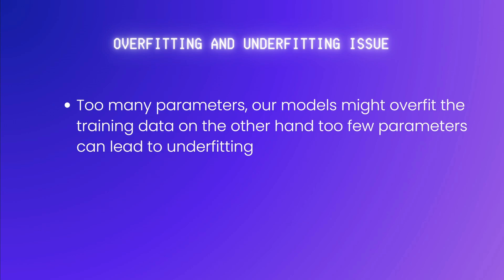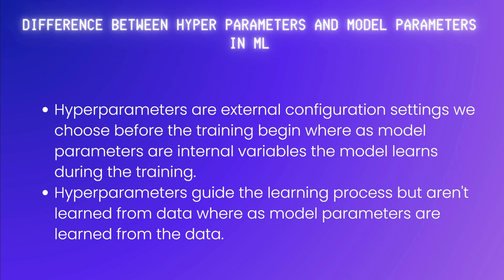Now let's understand the difference between hyperparameters and model parameters. Hyperparameters are the external configurations we choose before training begins, whereas model parameters are the internal variables the model learns during training. Hyperparameters guide the learning process but aren't learned from the data, whereas model parameters are learned from the data.